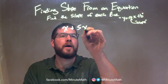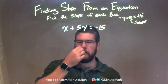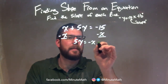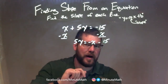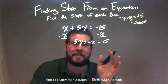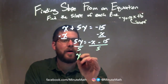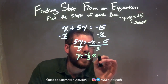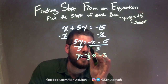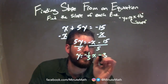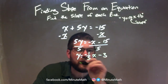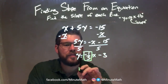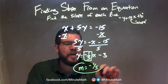x plus 5y equals negative 15. I want to get y by itself, so I subtract x from both sides. That gives me 5y equals negative x minus 15 — not like terms, not combining them. To get y by itself, I divide both sides by 5. I need to distribute the 5 to both parts: negative x divided by 5 is negative 1 fifth x, and 15 divided by 5 is 3. So y equals negative 1 fifth x minus 3. That's in slope-intercept form. The m value — coefficient in front of x — is negative 1 fifth. m equals negative 1 fifth. That is our final answer.